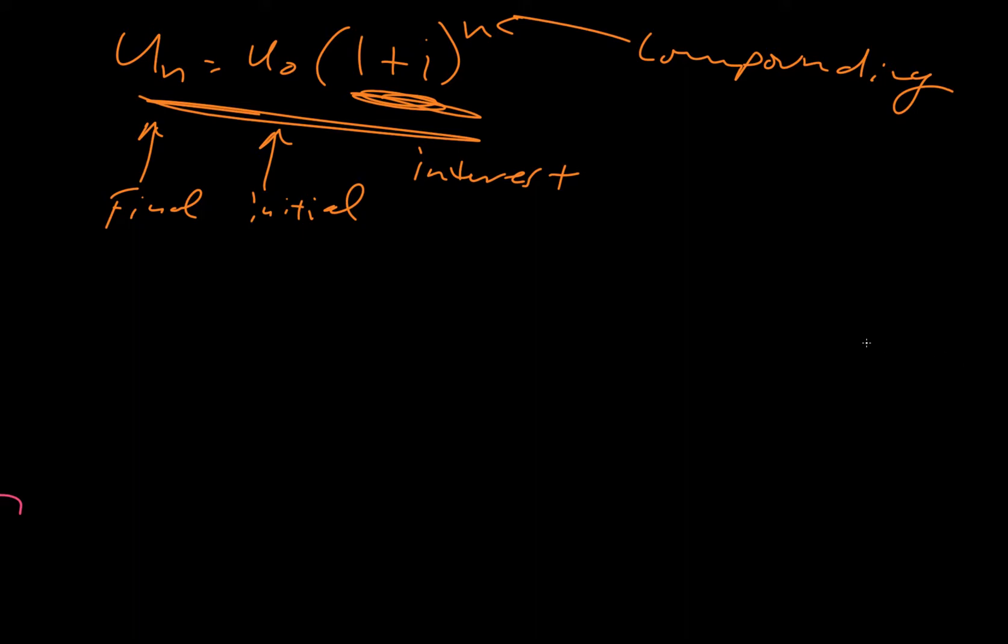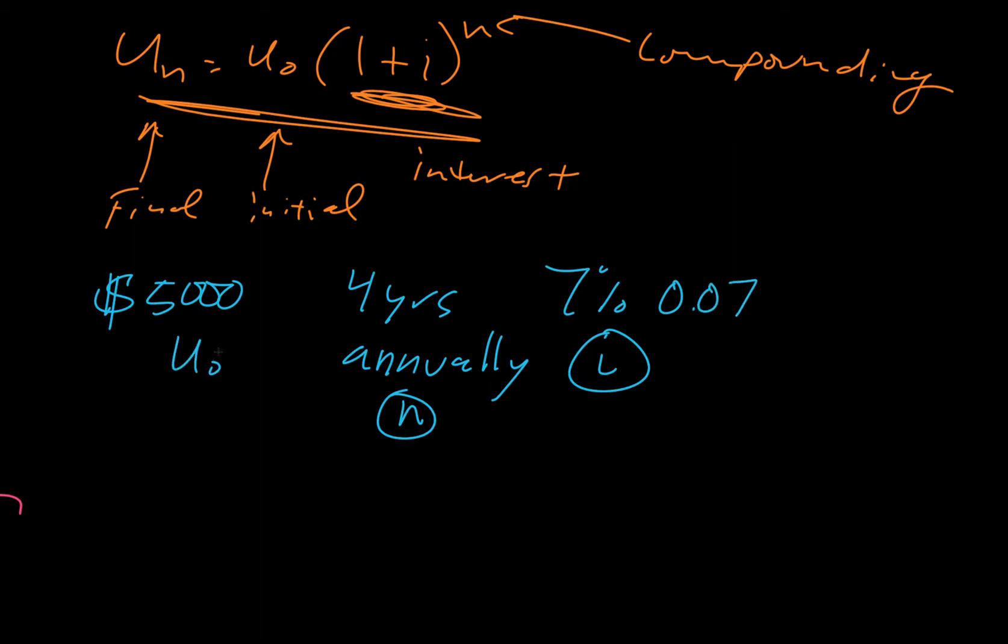Okay. Now we're going to do example 12. So we have $5,000. And we invest it for four years. That 7% is compounded annually. So you take the years and you multiply it by how many times each year it's compounded. So it's really just going to be 4 times 1. And that's going to get us our n value. So this is n. This is our i value. But we're going to write it as 0.07. And then this is our u naught value.